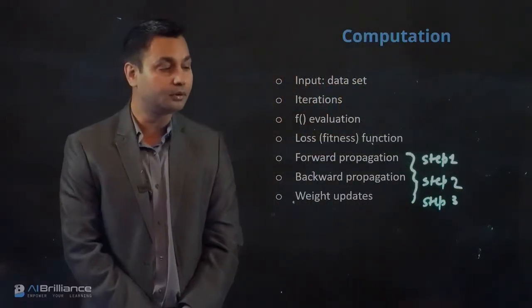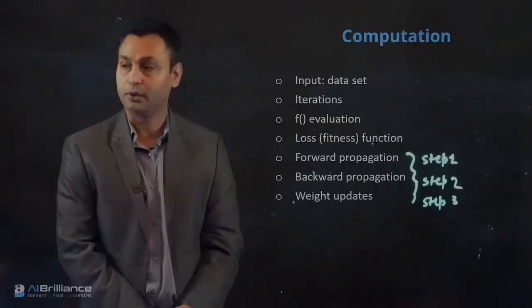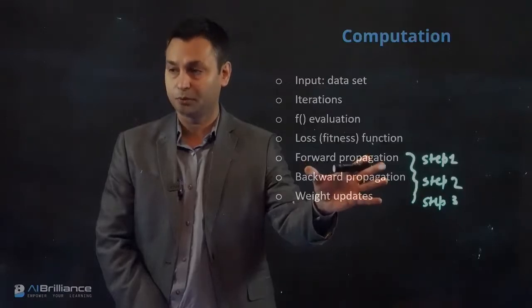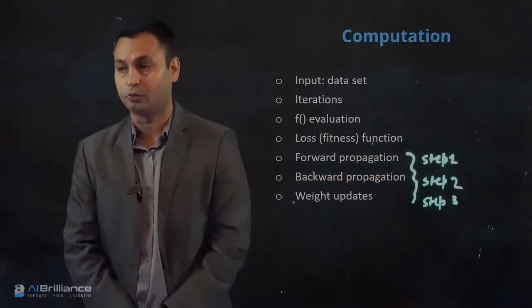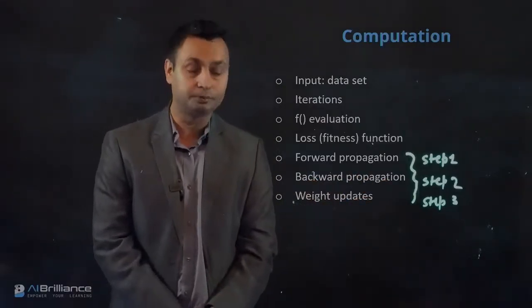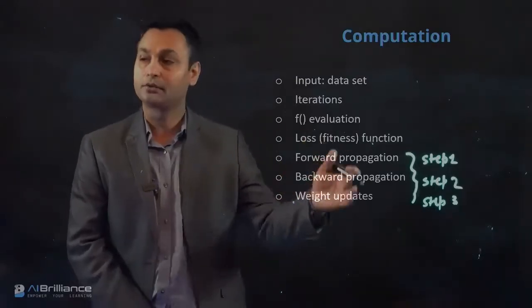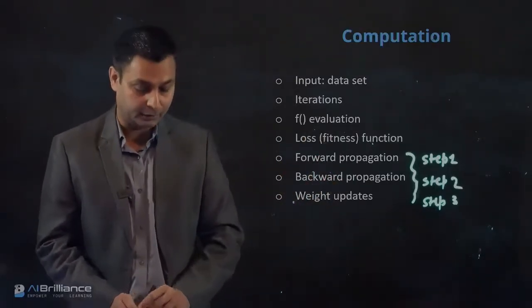That is known as forward propagation or sometimes it's known as forward prop. The second one is backward propagation which is known as backward prop, and the third step is weight update which allows us to basically tune the overall network that we have.